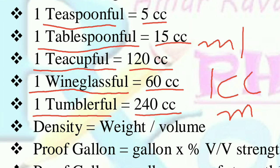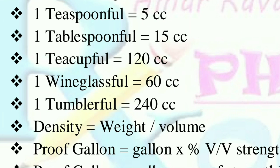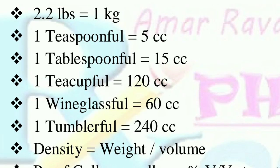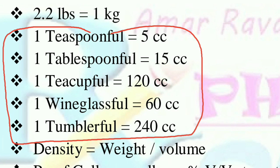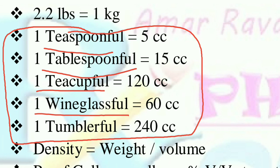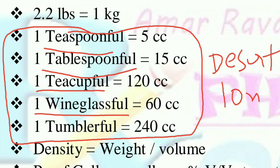You can consider ml instead of cc as well — ml means milliliter. This entire section of household measures is important; questions from it have appeared in previous papers many times. Questions have been asked about tablespoon full in ml, teaspoon full, wine glass, tumbler, and also desert spoon full. One desert spoon full is equal to around 10 ml.